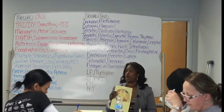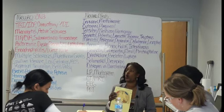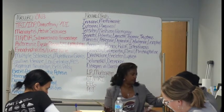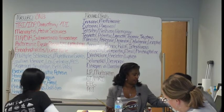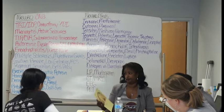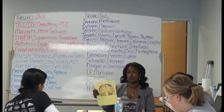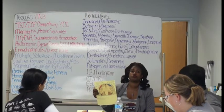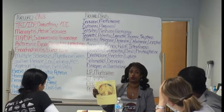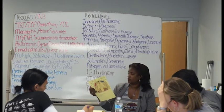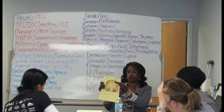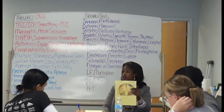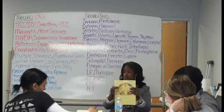S is for subdural, S is for slow bleed. This is the type of bleed that Natasha Richardson had — she's the famous actress who fell on a ski trip, felt fine, refused the ambulance, went back to the lodge, and died a few hours later from a slow bleed. It is slow because it is venous — blue for venous. S equals slow, S equals subdural, blue equals venous. Epidural hematoma, by contrast, is fast and arterial.